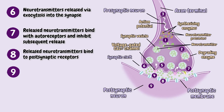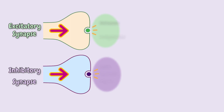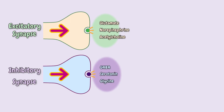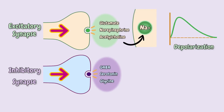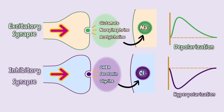Number nine, the signal is now initiated in the postsynaptic cell. And depending on which neurotransmitter binds to which receptor, this action may involve increasing the likelihood that the postsynaptic cell will become activated and itself fire an action potential, or decreasing it, resulting in inhibition.